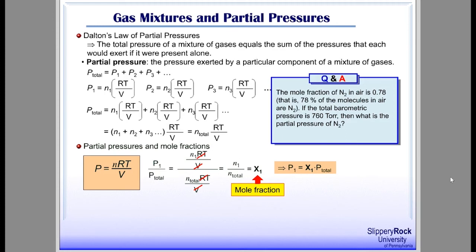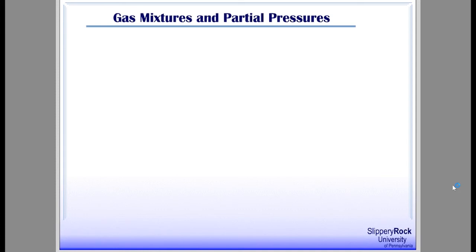Practice problem: the mole fraction of N₂ in air is 0.78 — that is, 78% of the molecules in air are N₂. If the total barometric pressure is 760 Torr, what is the partial pressure of N₂? Air is a mixture of 78% nitrogen, 21% oxygen, and trace amounts of other gases. The partial pressure of N₂ is its mole fraction times total pressure: 0.78 × 760 Torr = 590 Torr.